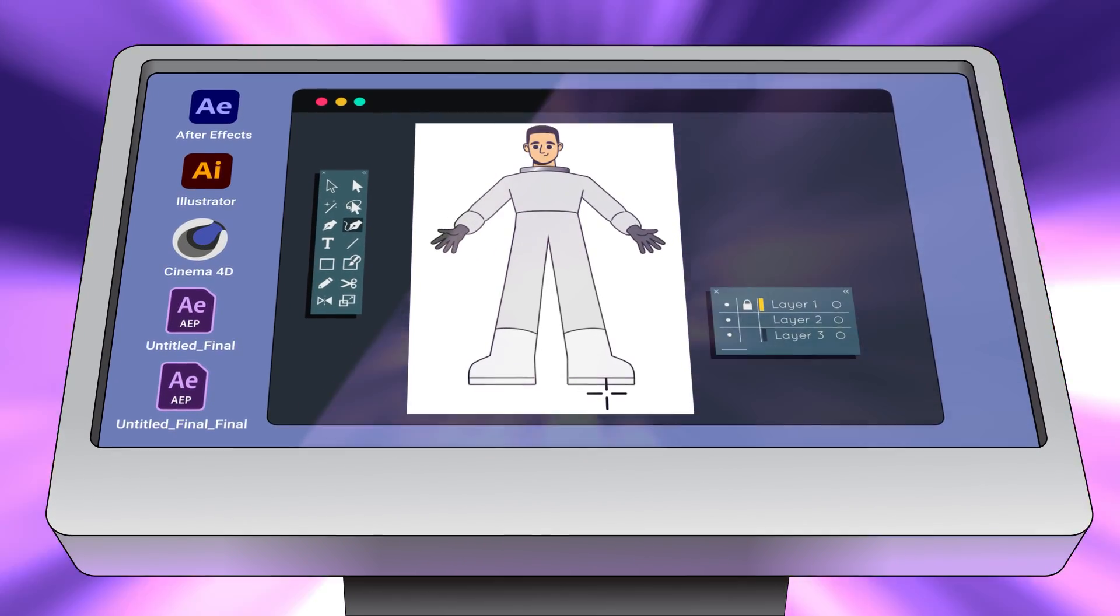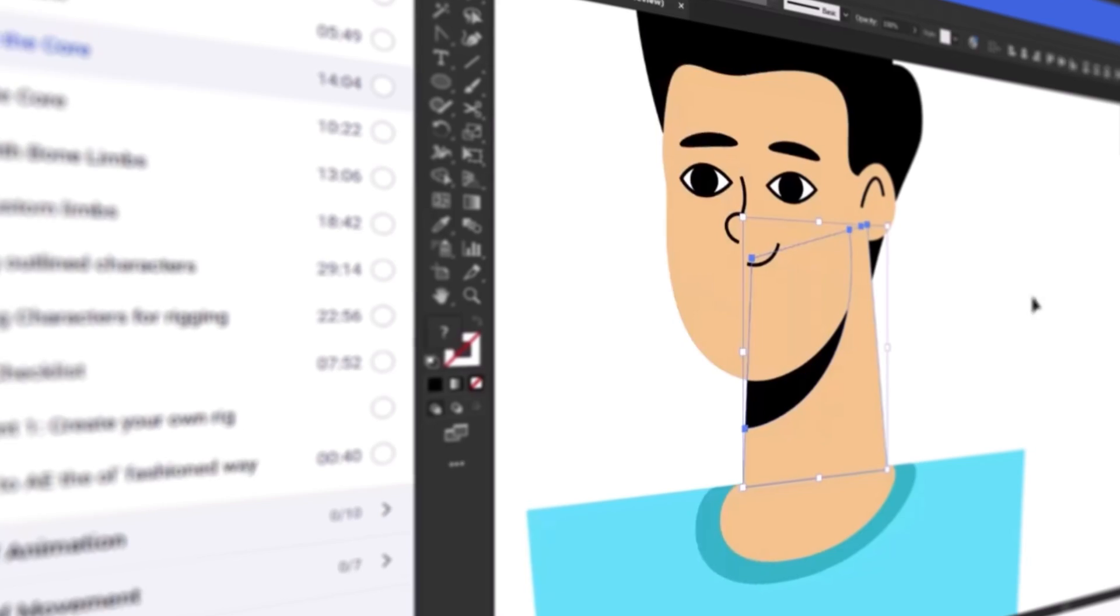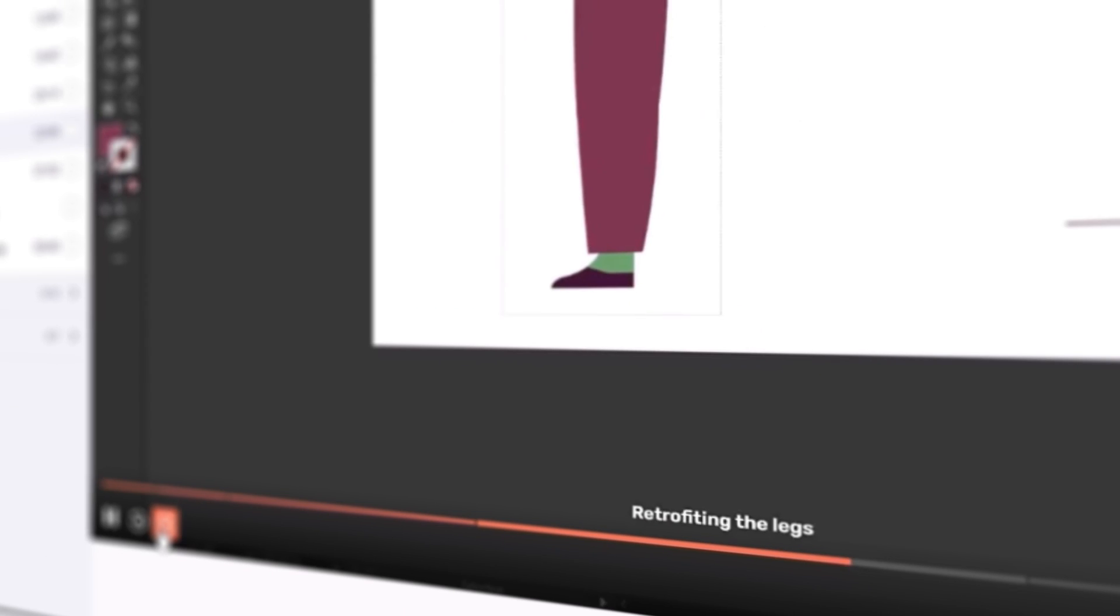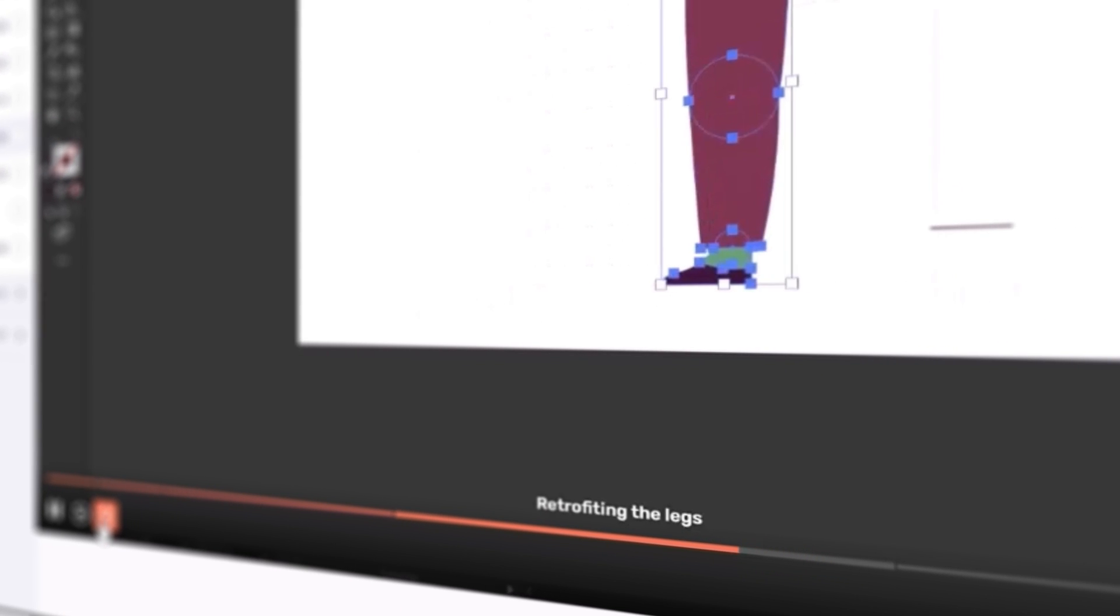Stage 1: Character Design. Learn to design characters that are compatible with rigging. Focus your energy on storytelling and animation knowing that your foundation is rock solid.